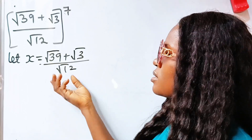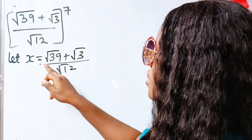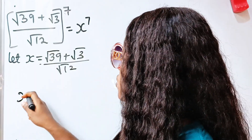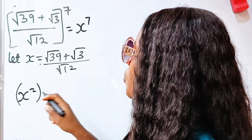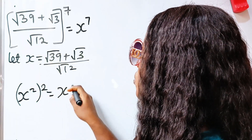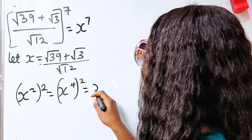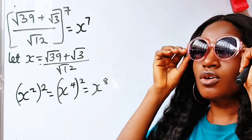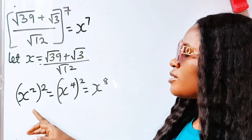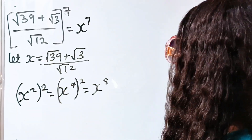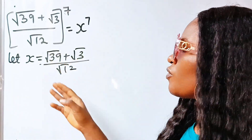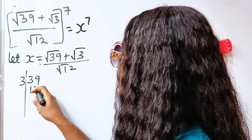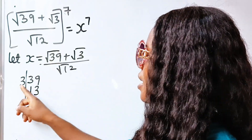Now, if x is equal to this expression, then this expression to the power of 7 is equal to x to the power of 7. We always try to first get x squared, then square it again to get x to the power of 4. Normally we would square again to get x to the power of 8, but this time we have x to the power of 7, so there is a twist. Let's simplify first before we find x squared. Now, 39 divided by 3 is 13, so we can express 39 as 3 times 13.